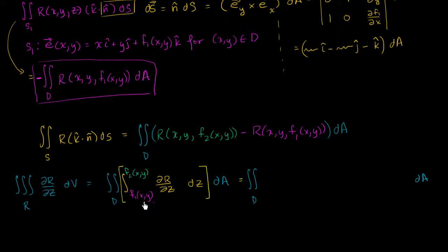So this is going to be r of x, y, z evaluated when z equals that. From that we subtract when z equals that. So r of x, y, f2 of x, y, and from that we need to subtract r when z is this, minus r of x, y, f1 of x, y, and make sure we got our parentheses.